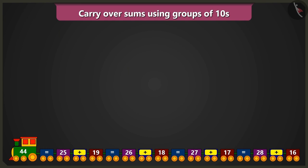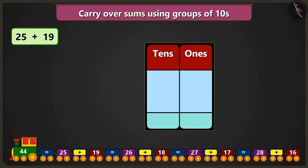In this train, first of all, 25 and 19 have been added. So now we will place these numbers in the box of tens and ones and add them.